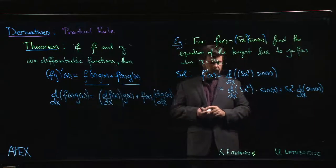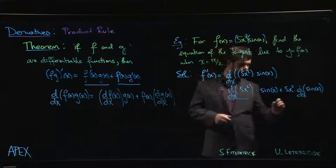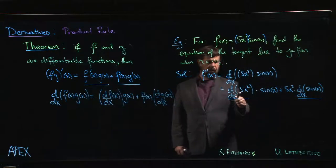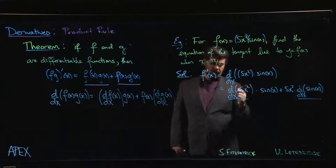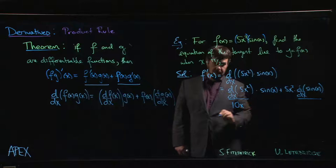So now we have to take care of these two derivatives. So this derivative here, this derivative here. So we know that for the derivative of 5x squared, the derivative of x squared, using the power rule, is 2x. Constant rule says we take that, we multiply by 5, and we get 10x.